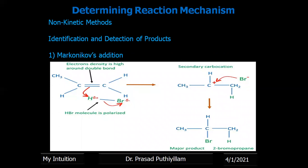Here, HBr — hydrogen connected to bromine through a covalent bond — breaks heterolytically such that bromine gets two electrons and a negative charge, and H becomes positively charged. The positively charged H is attracted towards the pi electrons of the double bond in propene. The attack of H⁺ occurs in a way that gives the more stable carbocation — a secondary carbocation rather than a primary one. Therefore, Br⁻ attacks the secondary carbocation, giving the final product 2-bromopropane. This is the Markovnikov reaction mechanism.